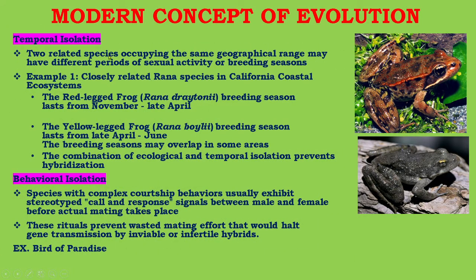Temporal isolation: two related species occupying the same geographical range may have different periods of sexual activity or breeding seasons. For example, in California's coastal ecosystem, the red-legged frog Rana draytonii has a breeding season from November to late April, and the yellow-legged frog Rana boylii breeds from late April to June. The breeding seasons may overlap in some areas, but the combination of ecological and temporal isolation prevents hybridization.